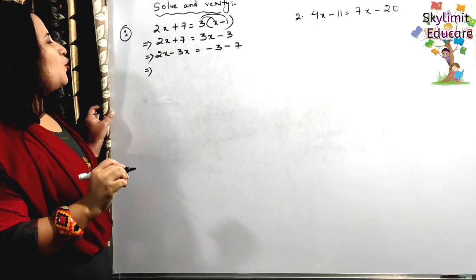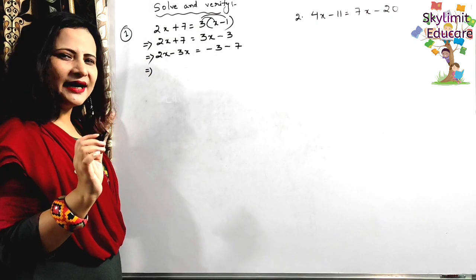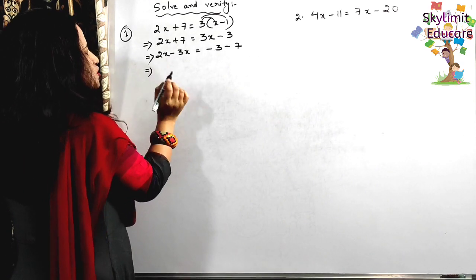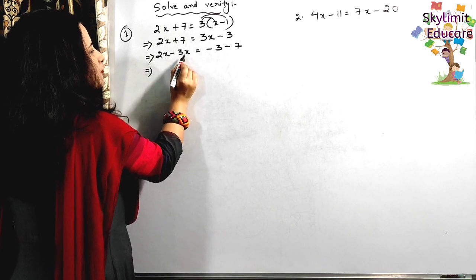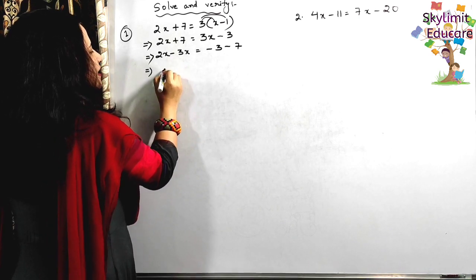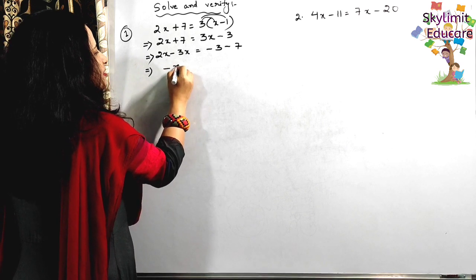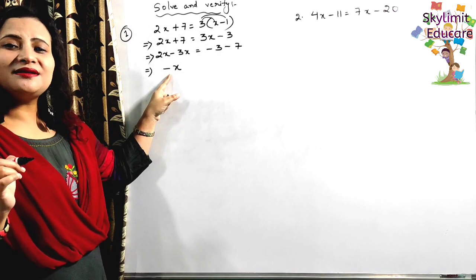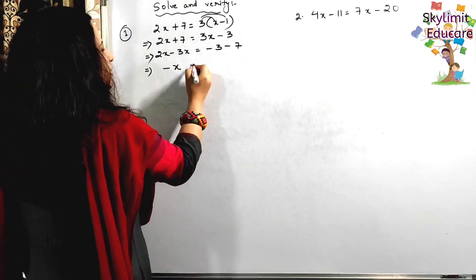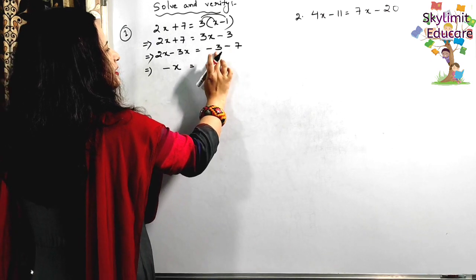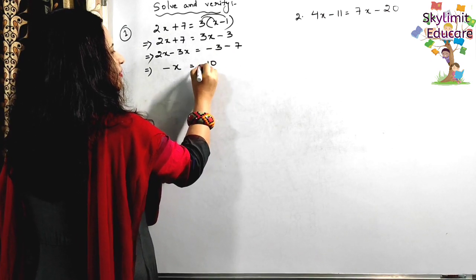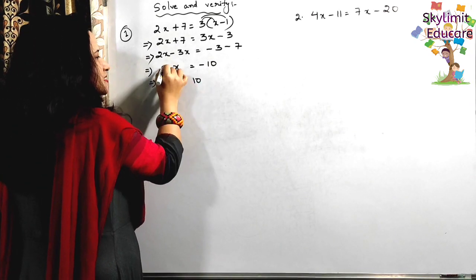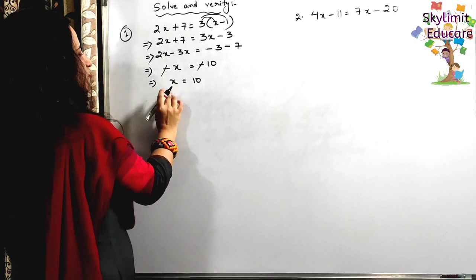Now we have 2x minus 3x — both are like terms, so we can subtract. 2 minus 3 gives minus 1, and the literal coefficient is x, so we write minus x (meaning the numerical coefficient is minus 1). On the right side, minus 3 minus 7 — both negative — add them to get minus 10. So minus x equals minus 10, the two minuses cancel, giving x = 10.